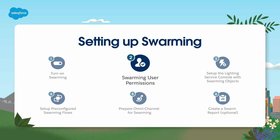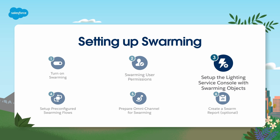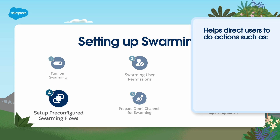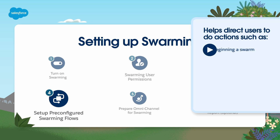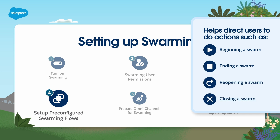Set up Swarming user permissions. Set up the Lightning Service console with swarming objects. Set up pre-configured swarming flows. Pre-configured swarming flow templates can help direct users to do actions such as beginning a swarm, ending a swarm, reopening a swarm, and closing a swarm.